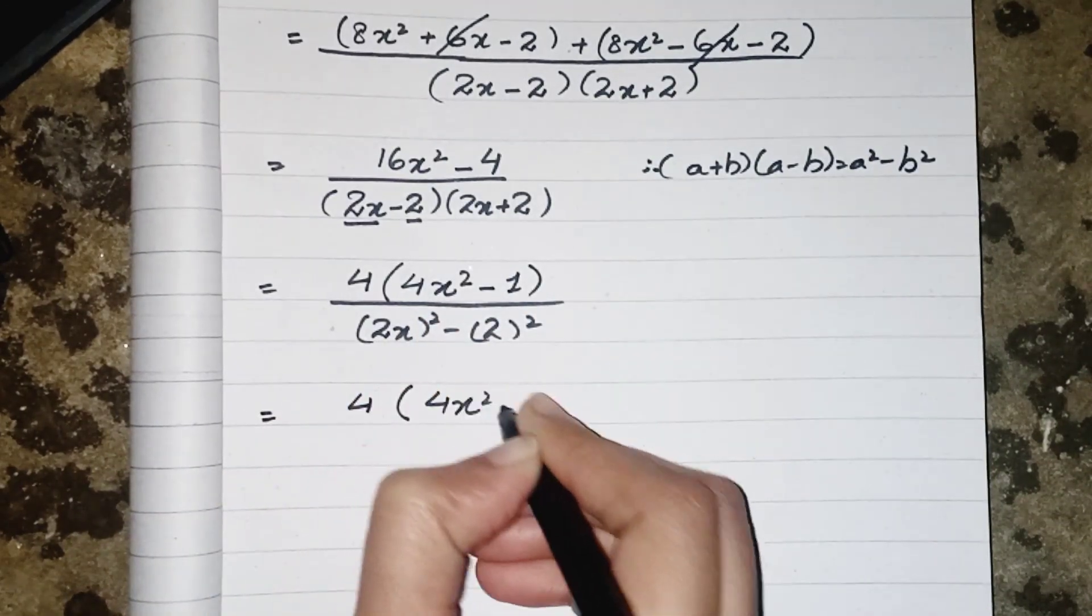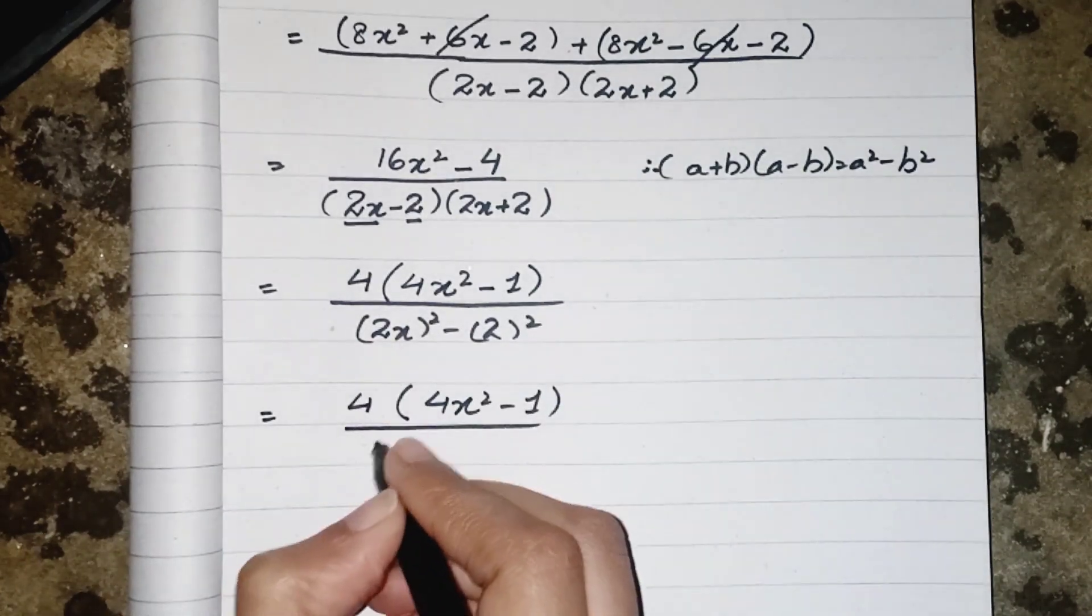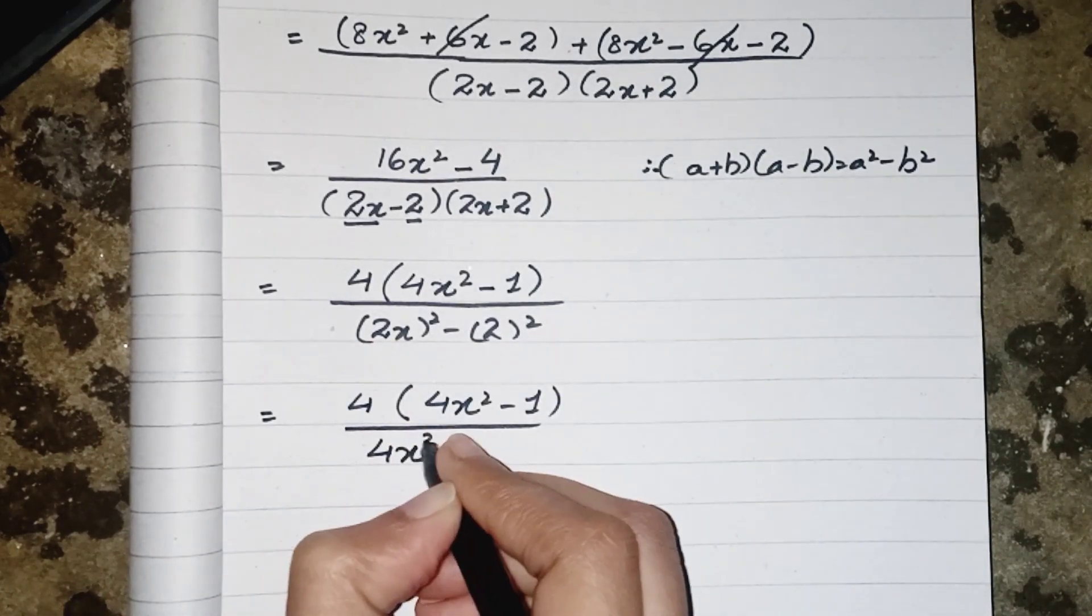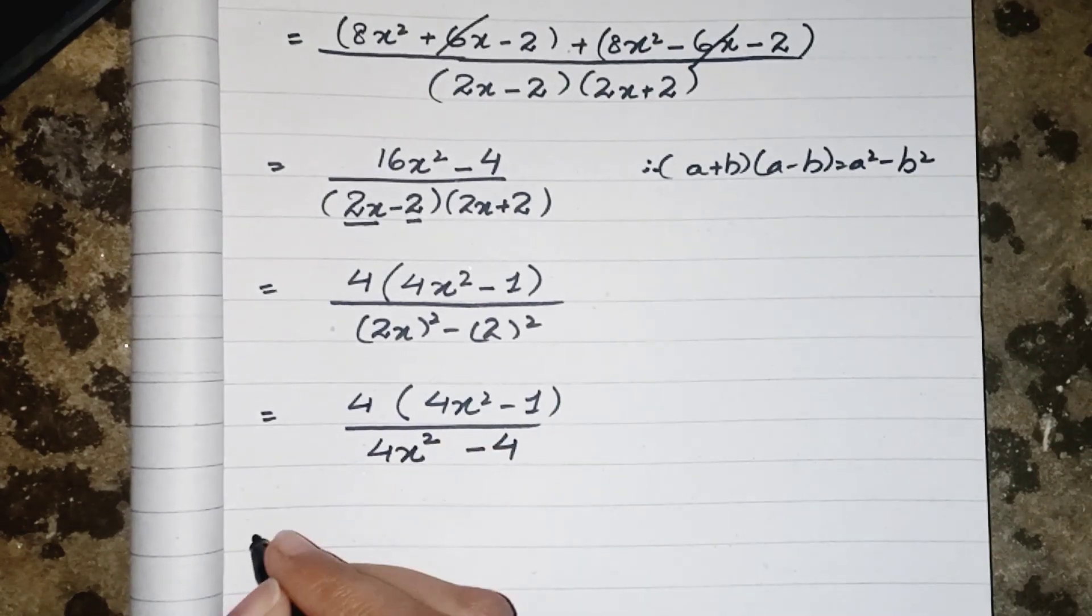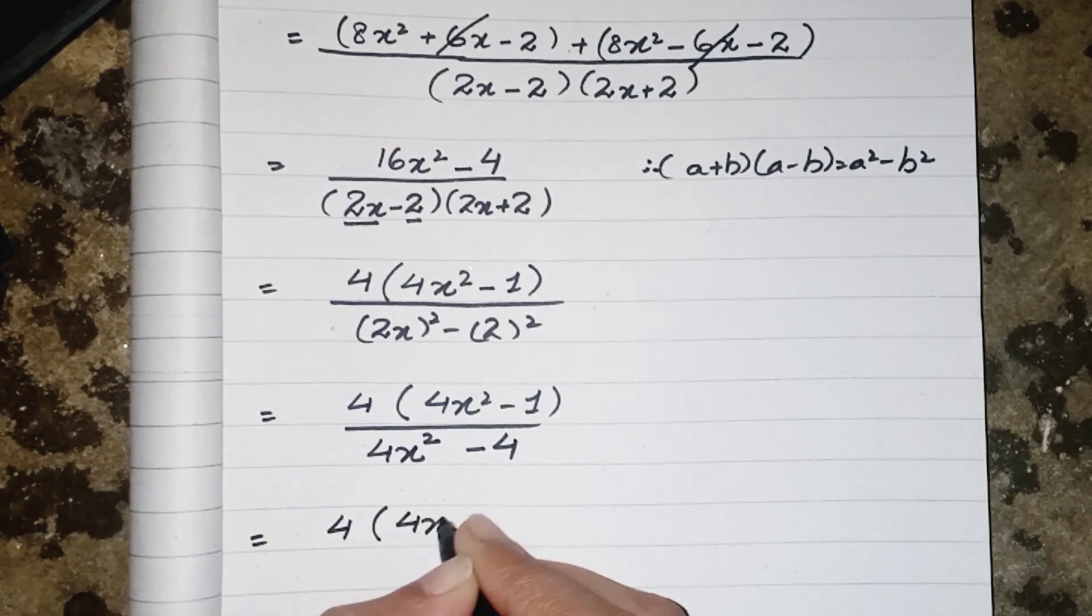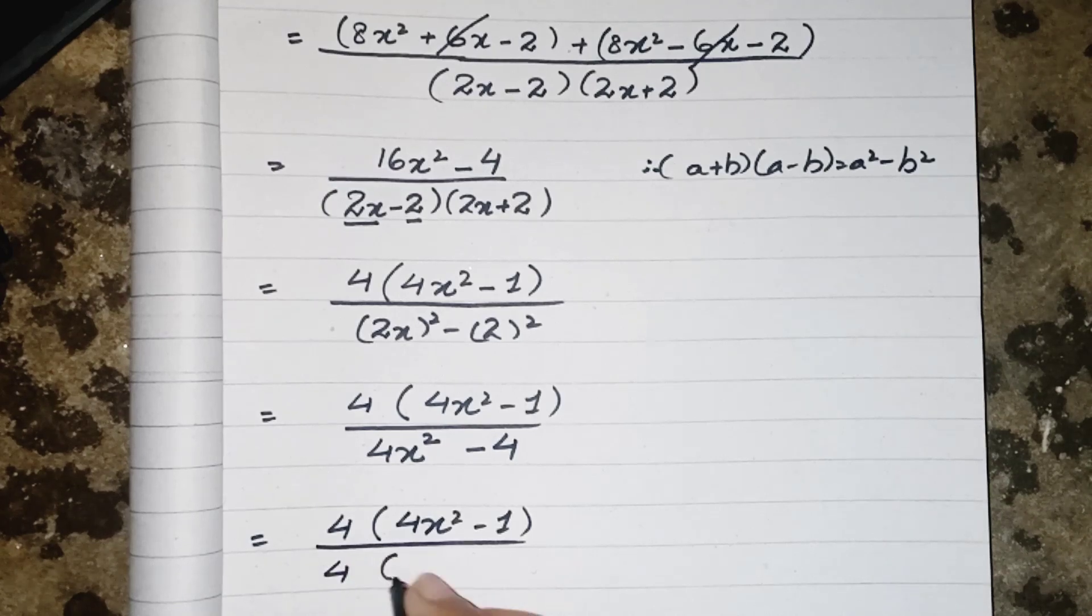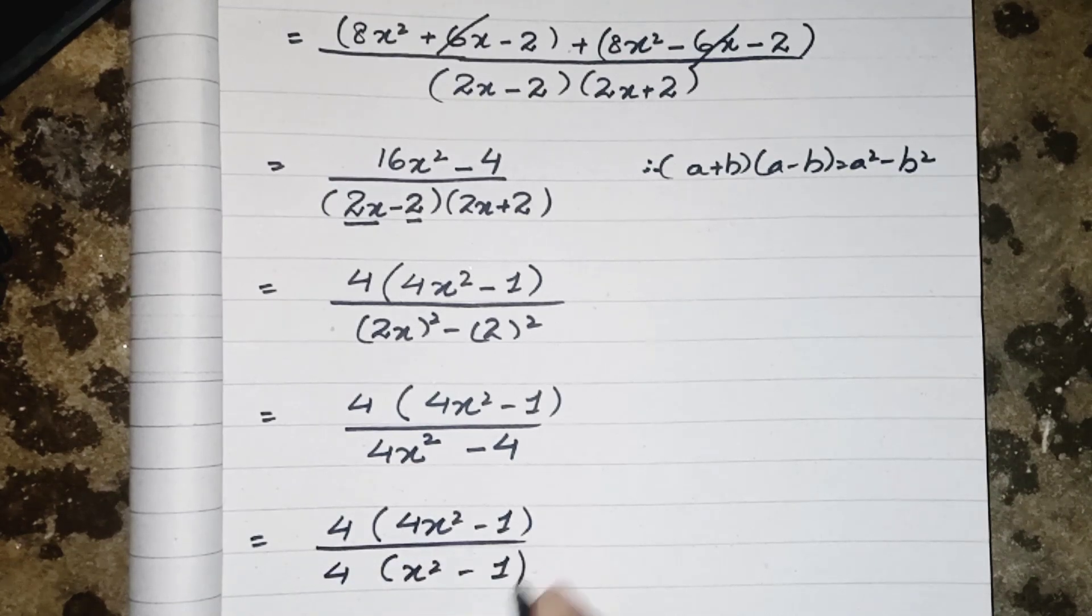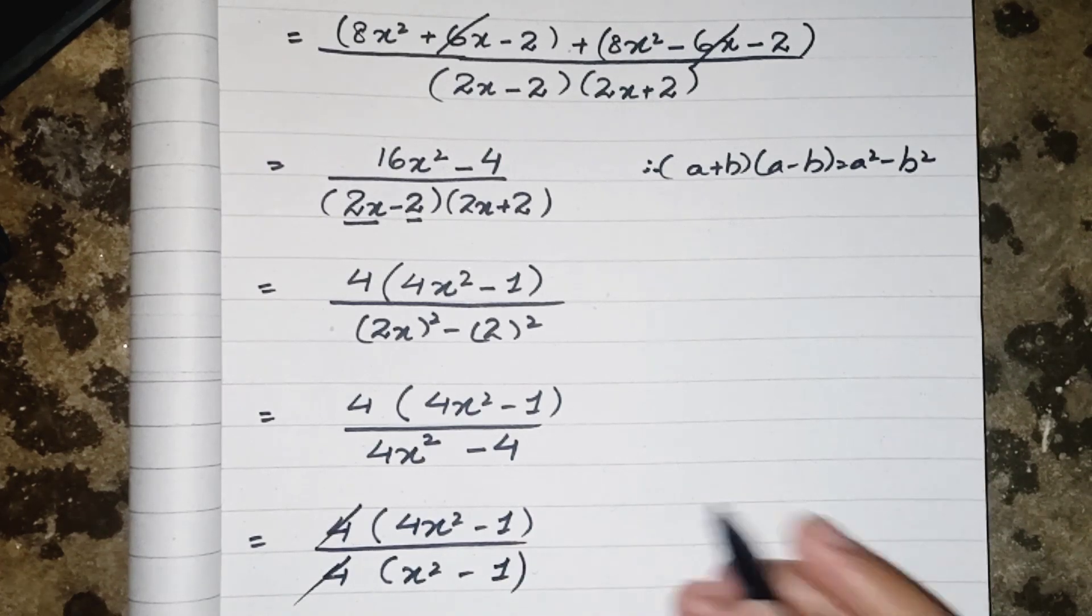4, 4x squared minus 1 upon square of 2x will be 4, square of x is x squared minus 4. In the denominator we have also 4 as common. So we can write it like 4x squared minus 1. 4 cancel out by 4 and this one is our answer.